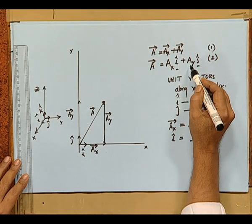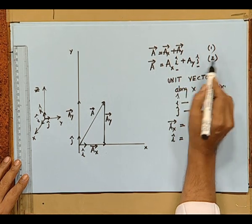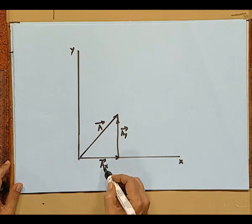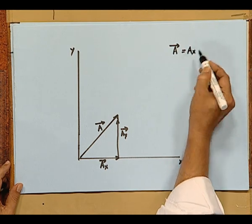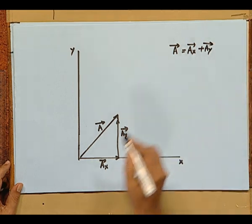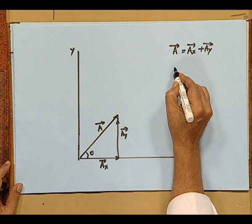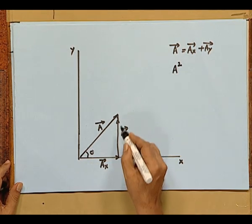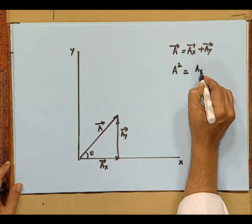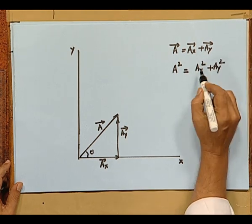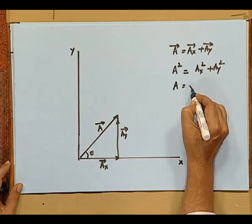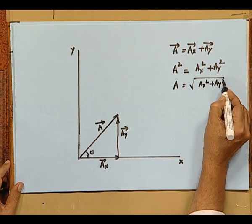So vector a is written as ax i-cap plus ay j-cap. Now, how do I use this in adding two vectors? Vector a is resolved into two components along x and y directions, written as ax vector plus ay vector. Let the angle be theta. When I write a vector as ax vector plus ay vector, the square of the magnitude of vector a is, from the Pythagorean theorem, ax squared plus ay squared. So if you know the components of the vectors, then you know the magnitude: the magnitude of the vector is the square root of ax squared plus ay squared.